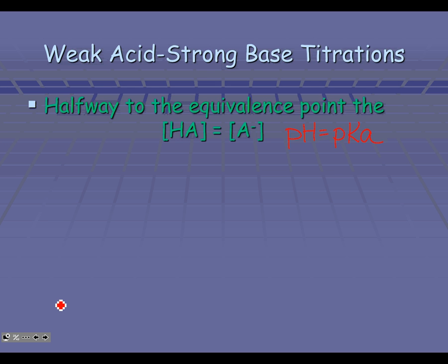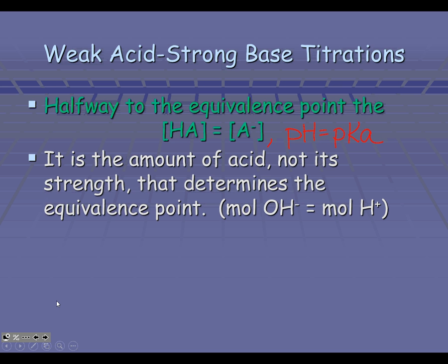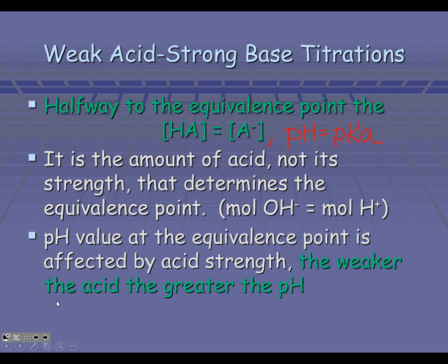When the HA equals the A minus, the pH equals the pKa. So at the halfway point to the equivalence point, there's a shortcut for working through the problems. It is the amount of acid, not its strength, that determines the equivalence point — we're looking for moles of hydroxide to equal moles of hydrogen. The pH value at the equivalence point is affected by the acid strength. The weaker the acid we begin with, the more basic that pH will become.